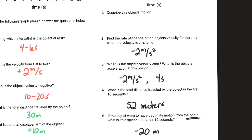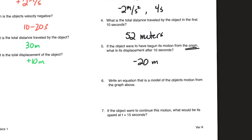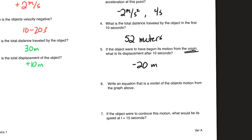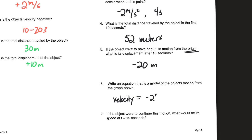Write an equation that is a model of the object's motion from the graph. If there's a y and an x in your equation, you'll be in trouble — don't do that. Make sure you indicate what's being graphed. It's a velocity graph, so: velocity equals negative two times time plus eight meters per second. The slope is negative two — which you should have already found — and the y-intercept is eight meters per second. You don't have to include units in the equation itself.